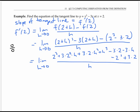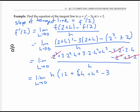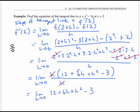A few terms cancel: two cubed minus two cubed, and minus three times two plus three times two both cancel to zero. All remaining terms have h in them, so I factor out an h from the numerator, giving me 12 plus six h plus h squared minus three, over h. Canceling h divided by h, I'm left with the limit as h goes to zero of 12 plus six h plus h squared minus three. Plugging in h equals zero gives 12 minus three, which is nine. So my derivative — the slope of the tangent line — is nine.